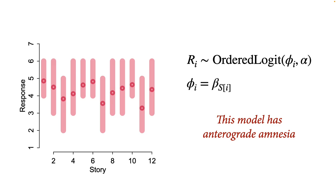We could include these index variables as mentioned before. For each story you just give it an index from 1 to 12, make a vector of coefficients — we'll call them beta — and use the story index for each response i to pull out the appropriate coefficient. This adjusts the average response so that some stories are on average more appropriate to people and others less. This will work. The information being left on the table, however, is that this model forgets everything it knows about how people respond as it moves from one story to the next.